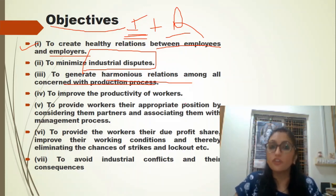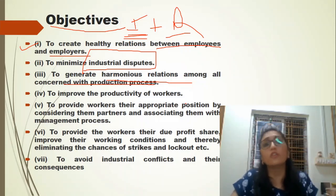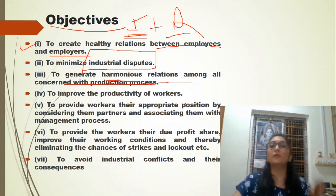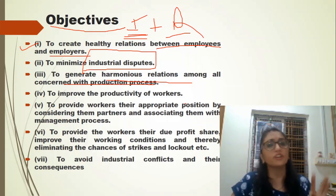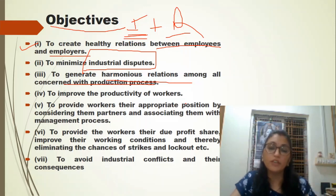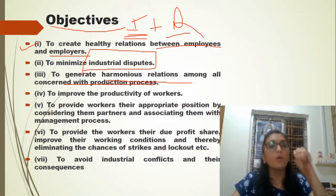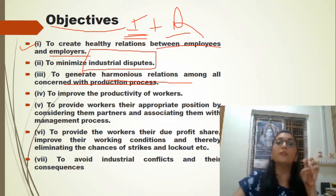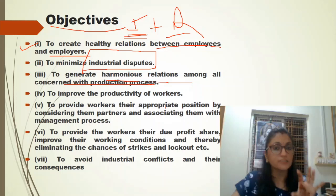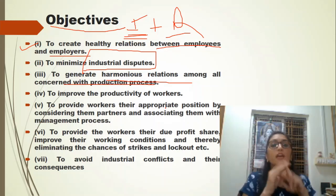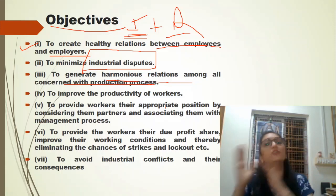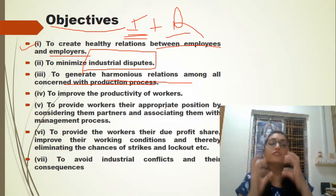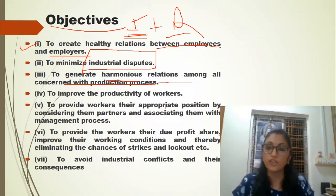The next objective is to improve the productivity of workers. If employees are happy, productivity will enhance because their morale will automatically increase. But if there is a dispute — no proper wage, no facilities provided — productivity will automatically go down. Industrial relations is a kind of bonding. If there is proper bonding between management and employees, workers can reach management and management can explain to workers, so productivity will automatically enhance.